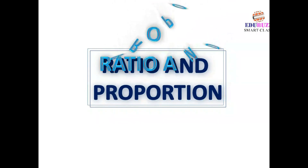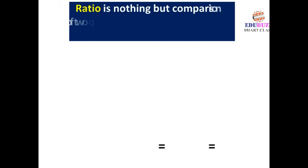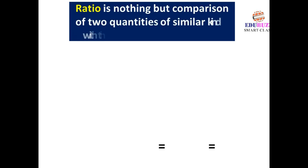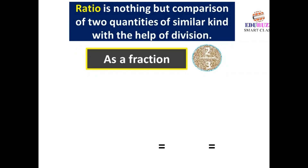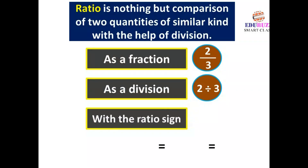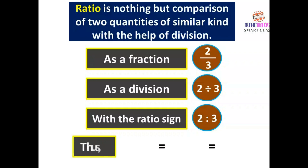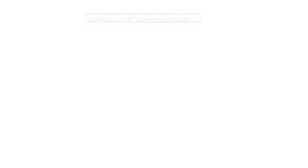Ratio and proportion. A ratio is nothing but the comparison of two quantities of similar kind with the help of division. It can be expressed as a fraction 2/3, as a division 2 divided by 3, or with the ratio sign as 2:3. Thus 2/3 = 2 ÷ 3 = 2:3.